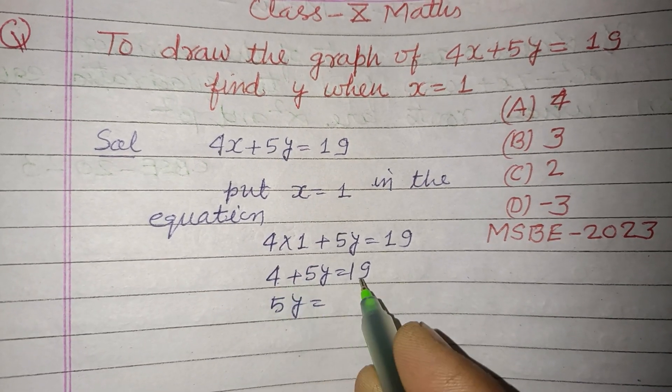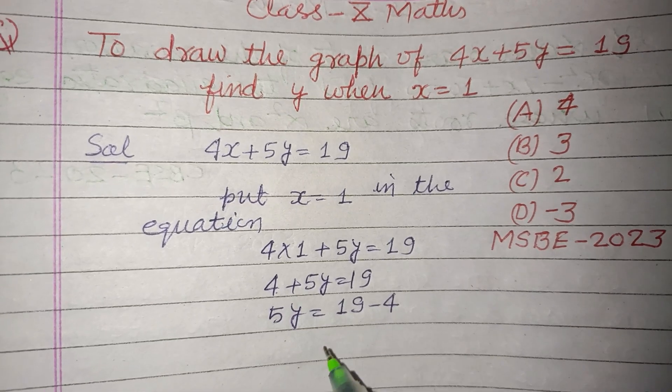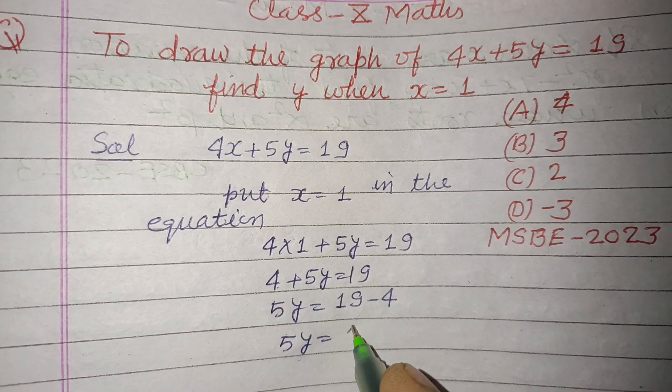5y equal to... we bring 4 towards right side so it becomes negative here. 5y equals 19 minus 4.